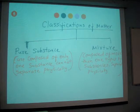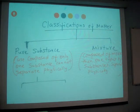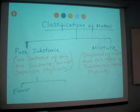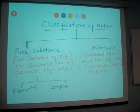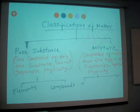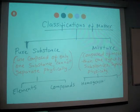Now, in a pure substance there are two types: elements and compounds. And in mixtures there are two types: homogeneous and heterogeneous.